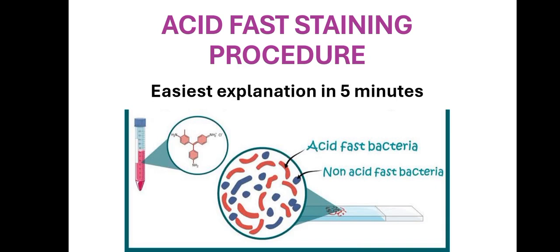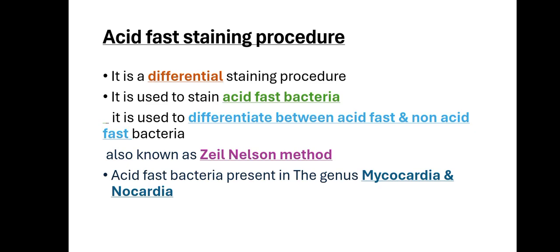Assalamu alaikum, I hope you all are doing great. Today in this video we are going to discuss the acid fast staining procedure. It is a microscopic procedure used in laboratory diagnosis of many bacteria. Basically, it is a differential staining procedure — it is used to stain acid fast bacteria and to differentiate between acid fast and non-acid fast bacteria.